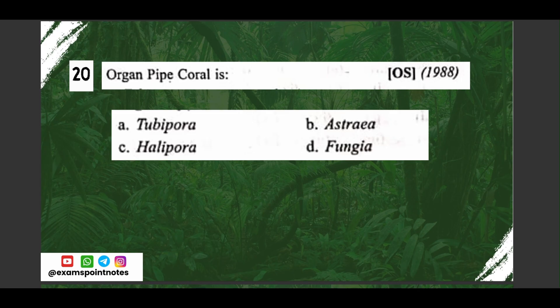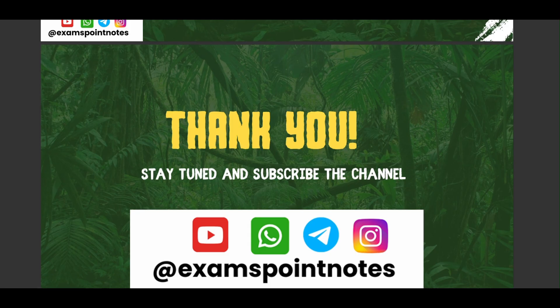This is the last question of the video, and you have to answer it in the comment section. Those who give the correct answer will get a shout out in the next video. Question number twenty: organ pipe coral is — A) Tubipora, B) Astrea, C) Halimeda, D) Fungia. Comment your answer below. Thank you very much, stay tuned, subscribe to the channel — the next part of this chapter will be uploaded soon.